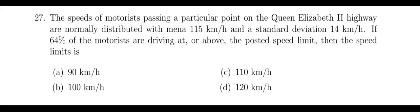Speeds of motorists passing a particular point on the Queen Elizabeth II Highway are normally distributed with a mean of 115 kilometers per hour and a standard deviation of 14 kilometers per hour. 64% of the motorists are driving at, so 0.64 right here, are driving at or above the posted speed limit, then the speed limit is.